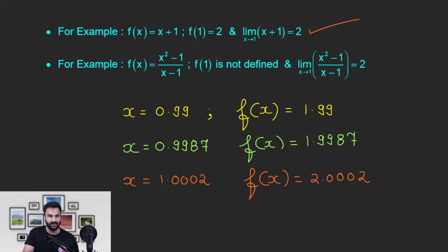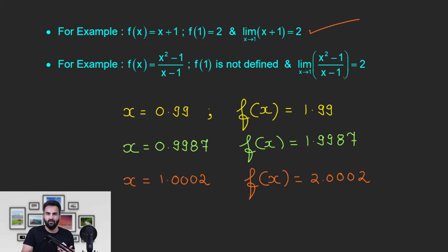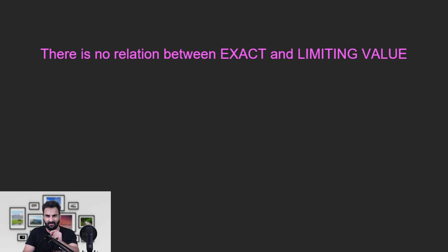यहाँ पर operate करने का तरीका यह है: factorize किया, (x-1)/(x-1) को cancel कर दिया — cancel कर सकते हैं because x is not equal to 1, it is approaching to 1। जो बचा वो (x+1) है, और जब x, 1 को approach करता है तो (x+1) is approaching to 2। इन दो examples से क्या देखने को मिला? What is the relation between exact value and limiting value? — There is no relation between exact value and limiting value।